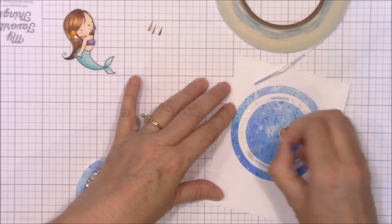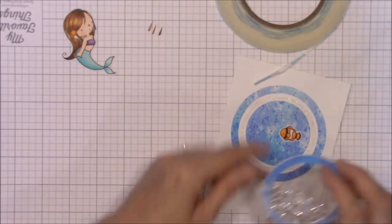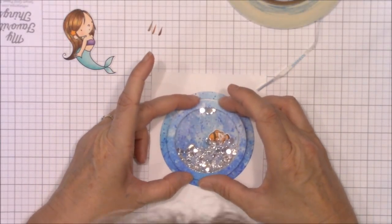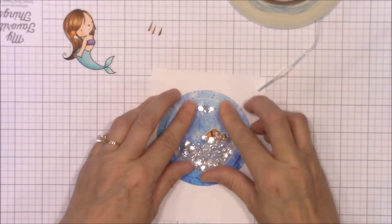Once the tape is down, you can adhere your shaker pocket to the card base. And remember to align it with the color patterns on the circles. Oh, how I love a fun interactive card.